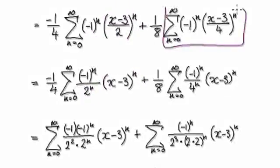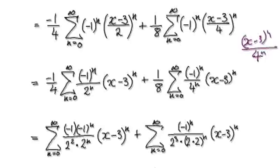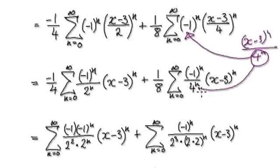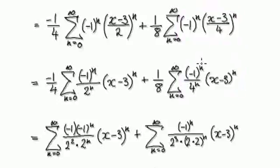And then do the same over here. Here you've got x minus 3 to the power of n over 4 to the power of n. But move the 4^n over here somewhere, so move 4 to the power of n over here. So from here, that would then take you to here.